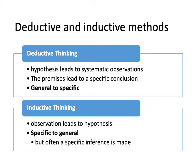The first thing I want to do is make a distinction between deductive and inductive thinking. I'll have a whole series of lectures on deductive logic coming up, but for now let's just make a very simple distinction between the two. Deductive thinking is when a hypothesis leads to systematic observations — premises lead to a conclusion — and you're usually going from a general idea to a specific conclusion. In deductive logic, we want to know whether a specific conclusion is valid or sound.